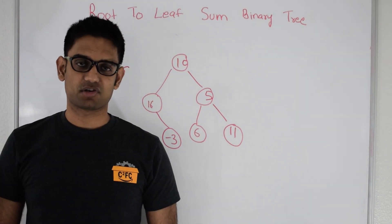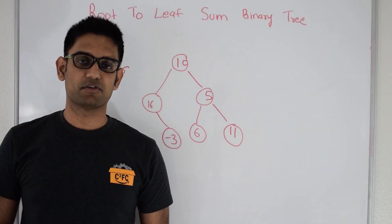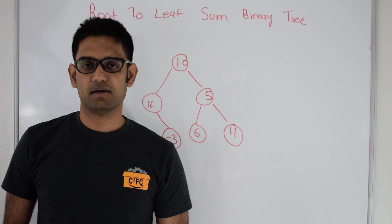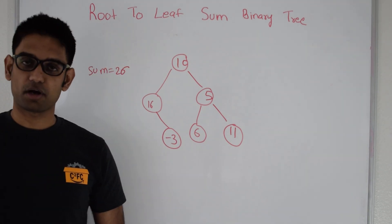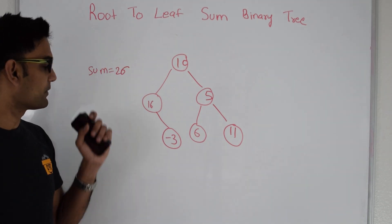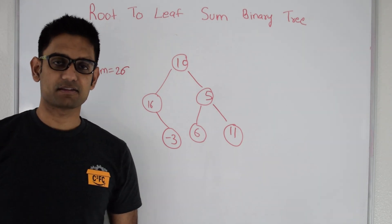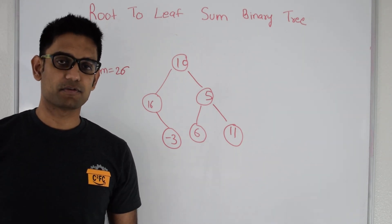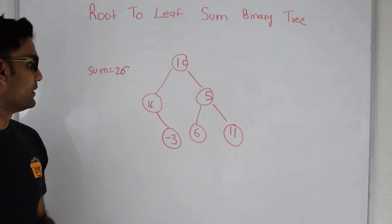Hello friends, my name is Tushar and today we are going to discuss the question: root to leaf path equal to sum. The question is given a binary tree — not a binary search tree — and given a sum, find if there is a path from root to leaf such that the sum of the nodes is equal to this sum.